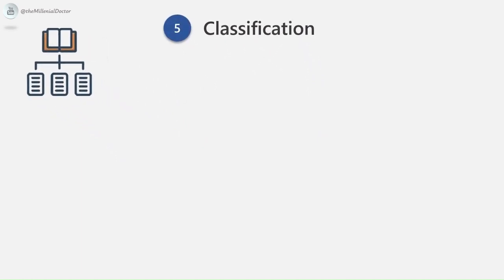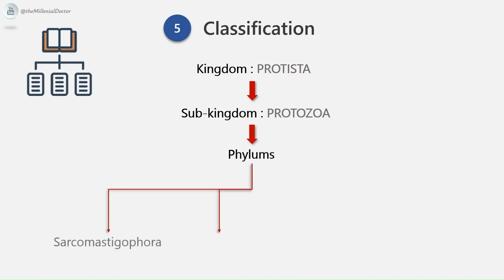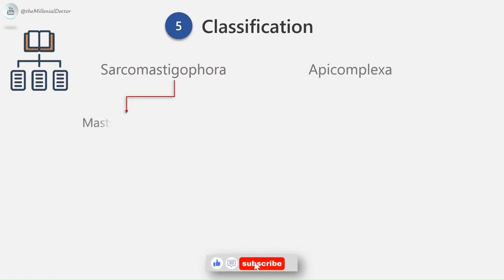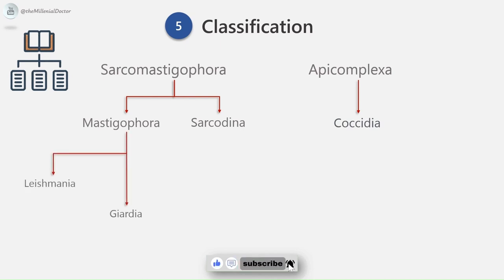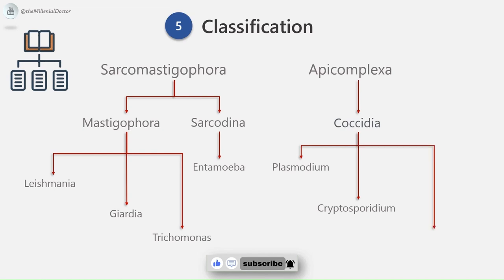Classification of protozoa: Protozoa belong to the kingdom Protista, sub-kingdom Protozoa, divided into phyla: Sarcomastigophora, Apicomplexa, Microspora, and Ciliophora. Sarcomastigophora is divided into Mastigophora and Sarcodina; Apicomplexa is divided into Coccidia. Mastigophora contains parasites such as Leishmania, Giardia, and Trichomonas. Sarcodina contains parasites like Entamoeba, whereas Coccidia has parasites like Plasmodium, Cryptosporidium, and Toxoplasma.